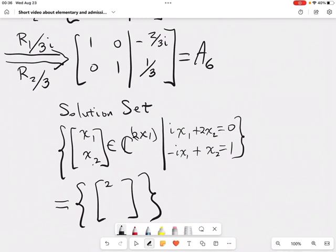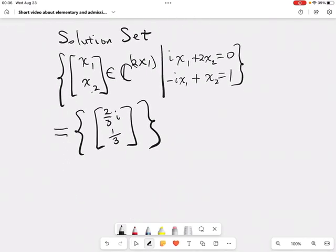So we get 2/3 i, 1/3 for the entries. Notice, the solution set has only one solution in it. And the first entry, X₁, is 2/3 i. The second entry, X₂, is 1/3.